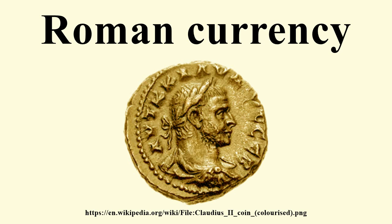A dichotomy existed between the coins with an intrinsic value and those with only a token value. This is reflected in the infrequent and inadequate production of bronze coinage during the Republic, where from the time of Sulla till the time of Augustus no bronze coins were minted at all, even during the periods when bronze coins were produced. Their workmanship was sometimes very crude and of low quality.